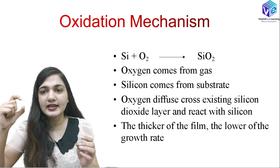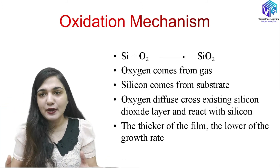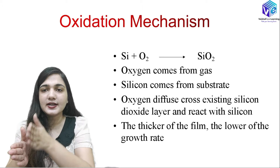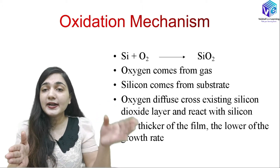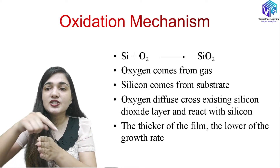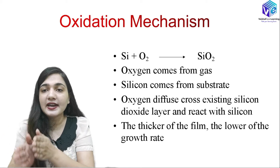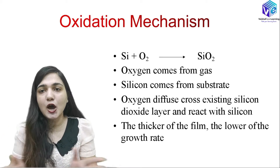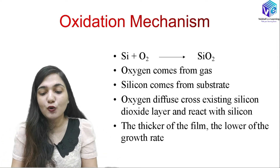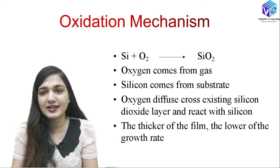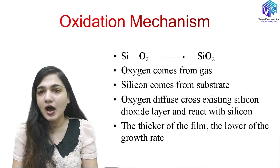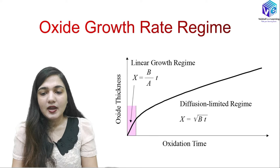Oxygen diffuses across the existing silicon dioxide layer and reacts again with the silicon — this is how we get a thicker and thicker SiO2 layer. If a SiO2 layer is already present on the substrate, oxygen must diffuse through that layer to reach the silicon, so diffusion plays a great role. The thicker the existing film, the lower the rate of oxidation layer growth. This is already shown in the Deal and Grove model.